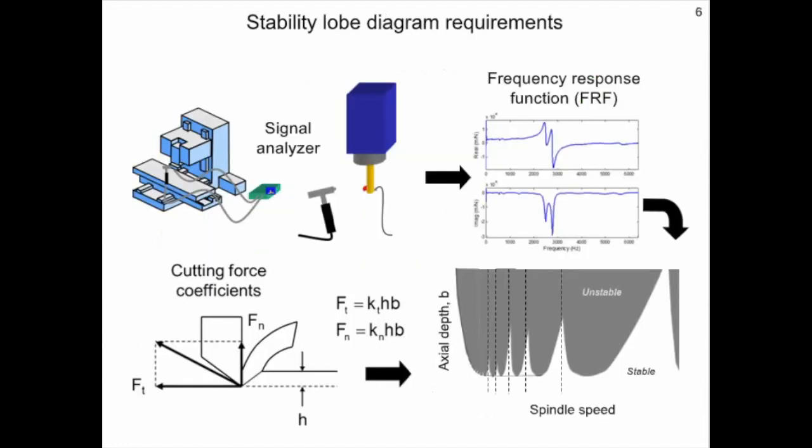There are two requirements for generating a stability lobe diagram. The first is the frequency response function at the end of the cutting tool. This describes the dynamic response or vibration behavior of the tool holder spindle machine tool. The second is a model of the cutting force. This is generally described using something referred to as cutting force coefficients, which relate the area of the chip being removed to the force components. Given these two items of information, a stability lobe diagram can then be generated.